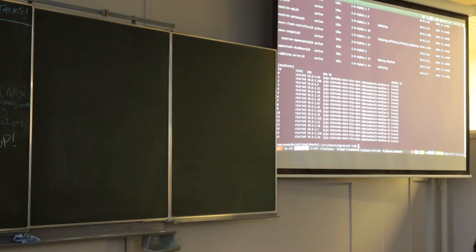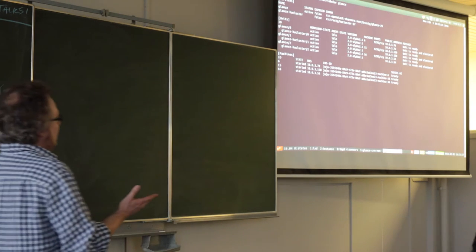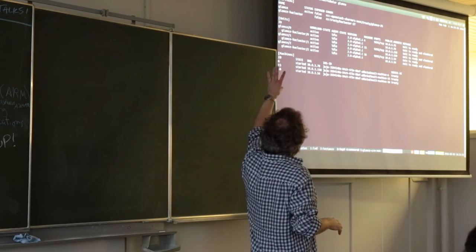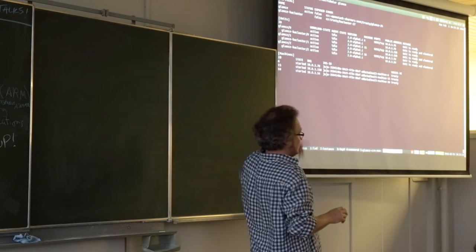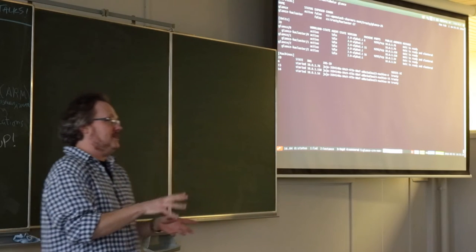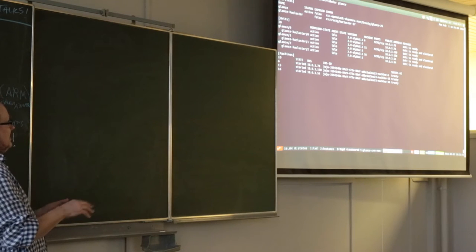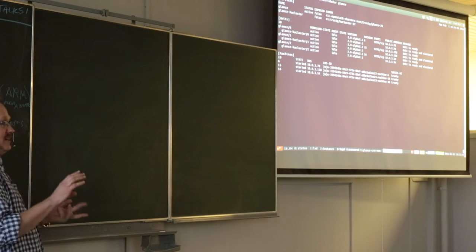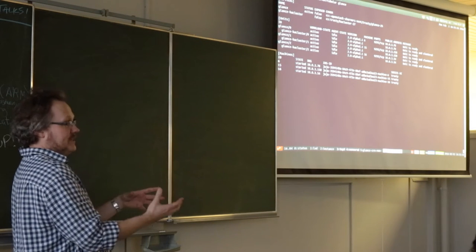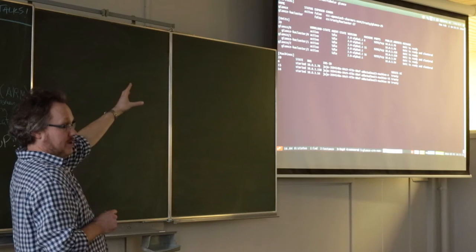If we focus in on the Glance service — the image service — this one's slightly different in that we've got three units of Glance running here, and one of those is also clustered. We're using a subordinate charm to configure our Corosync Pacemaker messaging layer and the resources required to cluster Glance across the three units. That includes HA Proxy, virtual IPs — all baked into that subordinate charm. Each unit is reporting a status about its current health.